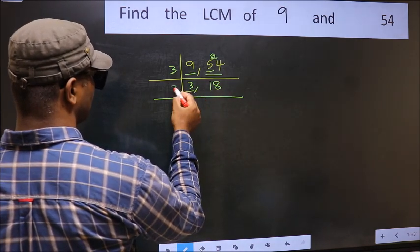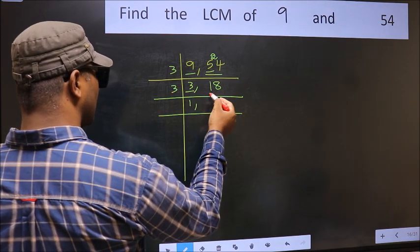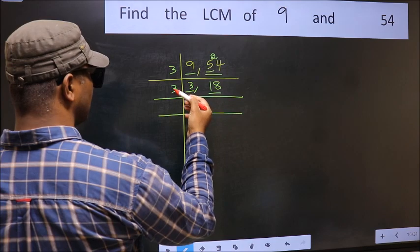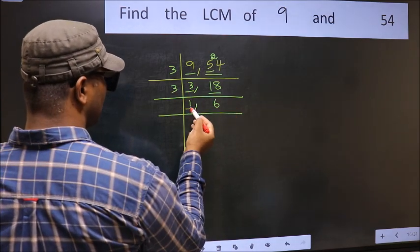Now here we have 3. 3 is a prime number. So 3 times 1 is 3. The other number 18. When do we get 18 in 3 table? 3 times 6 is 18.